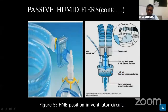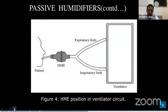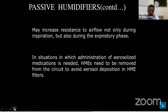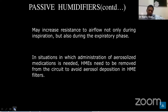The HME is placed between the endotracheal tube and ventilator tubing. Passive humidifiers may increase resistance to airflow not only during inspiration but also during expiration. In situations where aerosol medication administration is needed, the HME needs to be removed from the circuit to avoid aerosol deposition in the filter. These are some drawbacks of this filter.